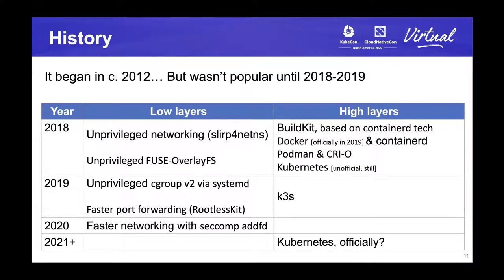In 2018, BuildKit started to support rootless containers, mostly for building images inside Kubernetes clusters using containerd technology. BuildKit was a game changer. After BuildKit supported rootless mode, Docker, Podman, and CRI-O all began to support rootless mode as well. We also ported rootless mode in Kubernetes, but it's still not upstreamed yet, mostly because we didn't have support for cgroups at that time.